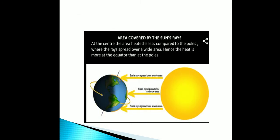The area covered by the sun's rays at the center is less compared to the poles, where the rays spread over a wide area. Hence the heat is more at the equator than at the poles.